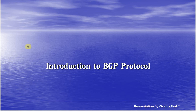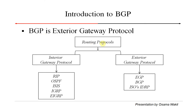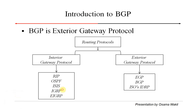In this section we are going to introduce the BGP protocol. Routing protocols are generally classified as interior gateway protocols — we all know RIP, OSPF, ISIS, IGRP, and EIGRP are all interior gateway protocols. We also have exterior gateway protocols, which are used for routing information between autonomous systems, such as EGP and BGP.